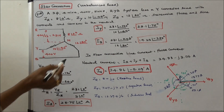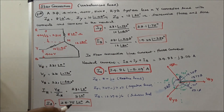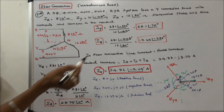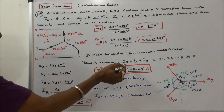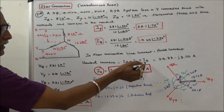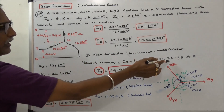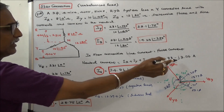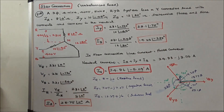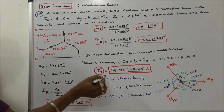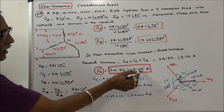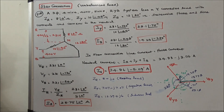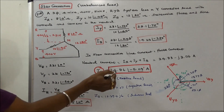In star connection, line current equals phase current, and line voltage equals root 3 times phase voltage. The neutral current equals IR plus IY plus IB, which is equal to 34.73 minus J3.06 amps in rectangular form. In polar form the magnitude is 34.86 angle minus 5.04 degrees. That is the neutral current.